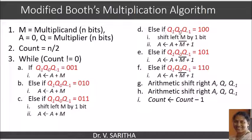If q1, q0, q-1 is equal to 100, then perform shift left operation on M by 1 bit and then subtract the resulted M from A, that is the partial product.